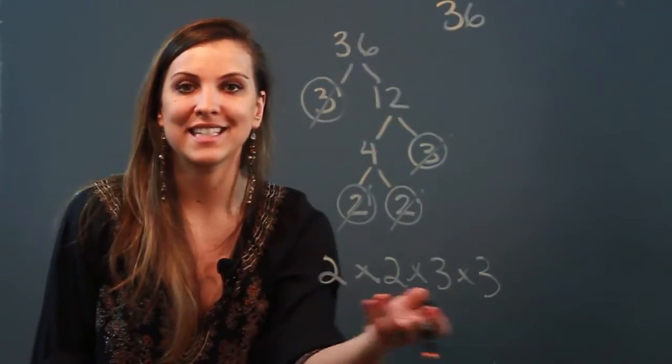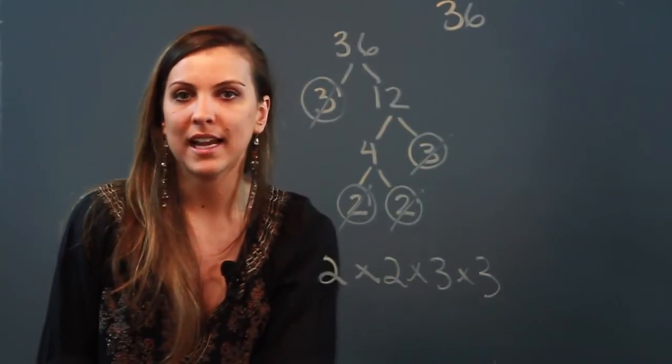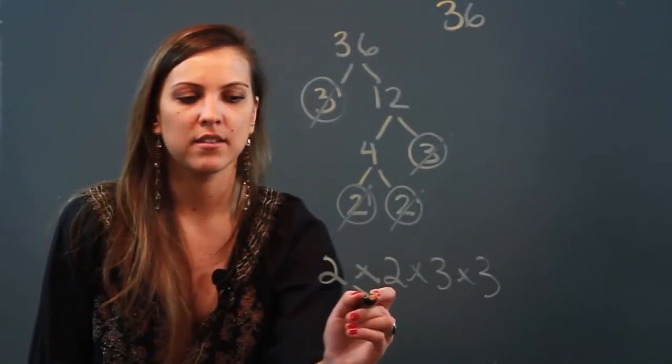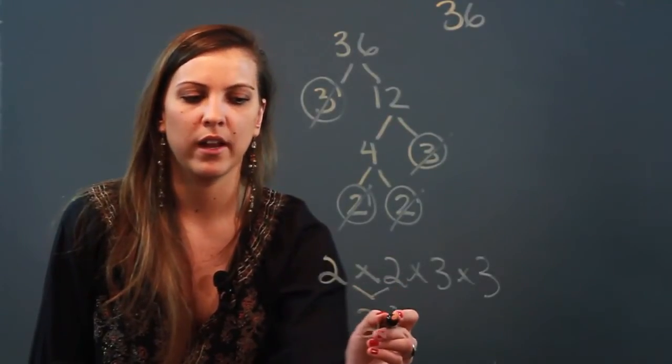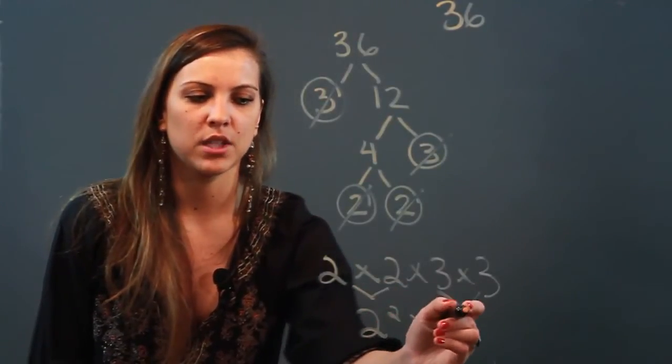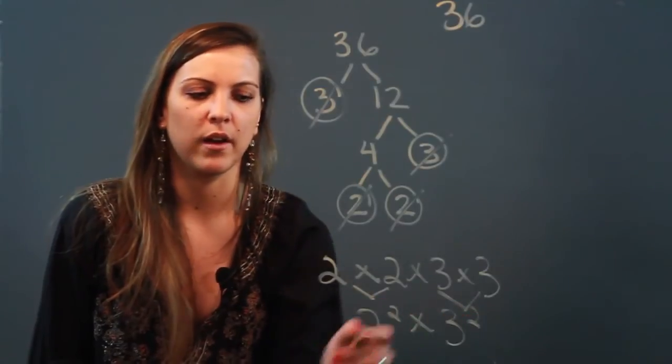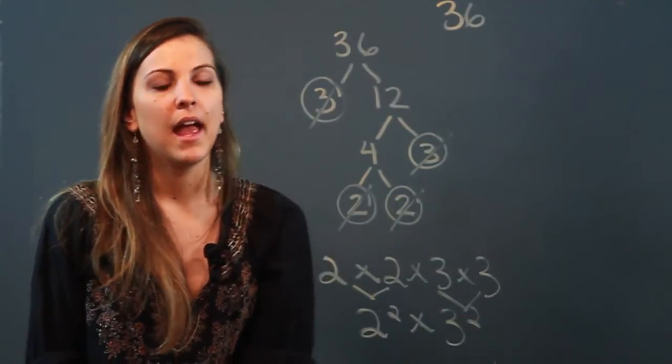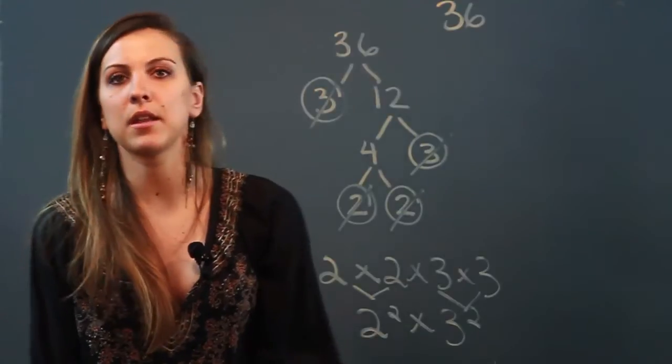In standard form, if I wanted to write in exponential form, I take this 2 times 2 and I rewrite it as 2 squared, and I take my 3 times 3 and I rewrite it as 3 squared. That's the prime factorization. Now my second method would be to use something called a division ladder.